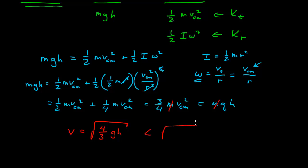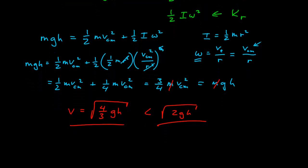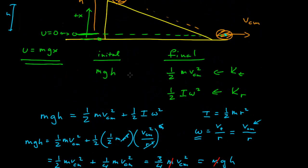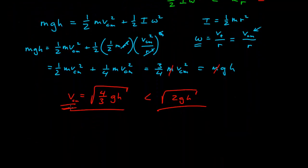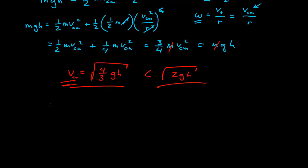Now compare this — this is less than the square root of 2gh, which is what the velocity would have been for an object just sliding frictionlessly. What's happened can be seen here: we had some initial potential energy, but instead of going simply into translational energy as in the frictionless sliding case, the energy is now divided into both translational and rotational motion, so with less translational energy, the center of mass velocity when it reaches the bottom is lower.